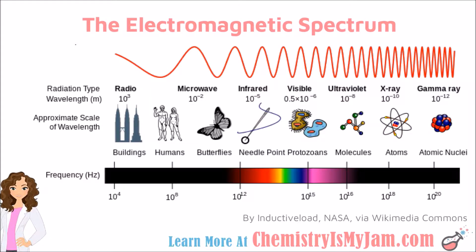Light is made up of waves. If you take all of the different types of light waves that are out there and put them in one place, you have the electromagnetic spectrum. I have a diagram of the electromagnetic spectrum before you. You can see that it ranges from radio waves, which have a wavelength of 10 to the 3rd meters, all the way down to gamma rays, which have a wavelength of 10 to the negative 12th meters.